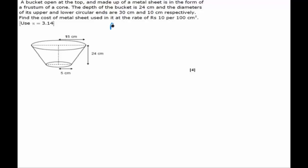So radius of the upper end would be half of the diameter of upper end. That would be equal to 30 by 2, 15 cm. And the diameter of the lower end was given equal to 10 cm. So the radius of the lower end will be equal to 10 by 2 which is equal to 5 cm.